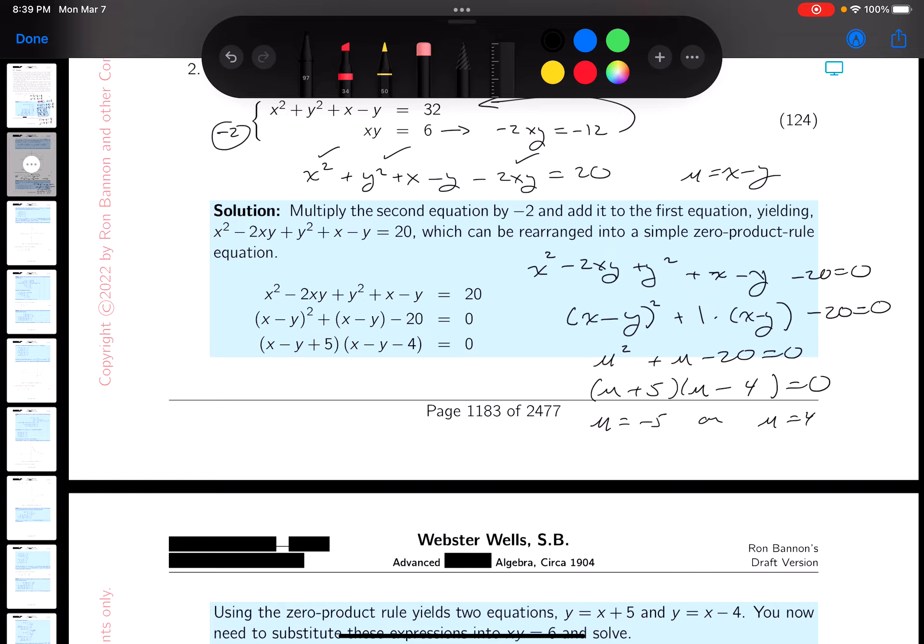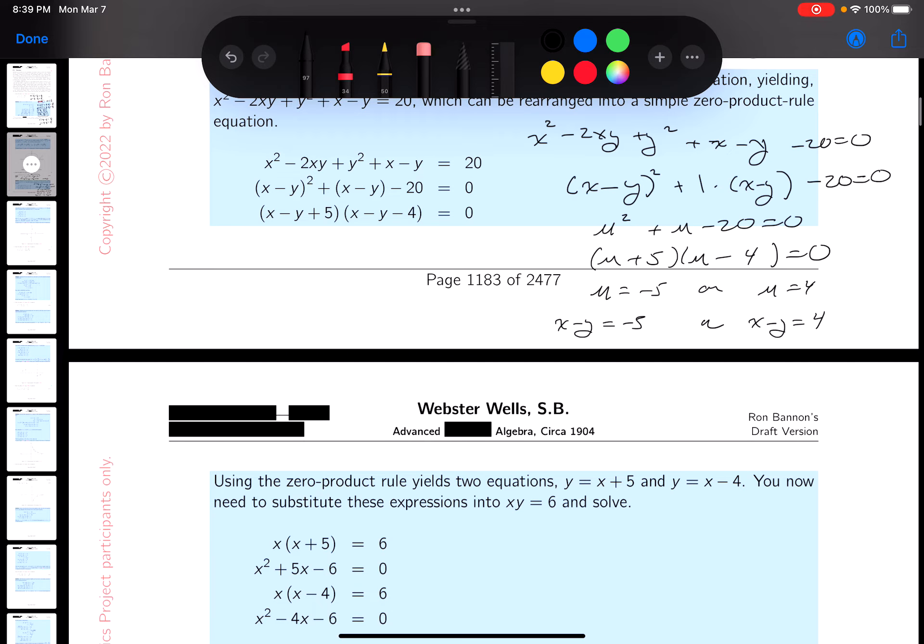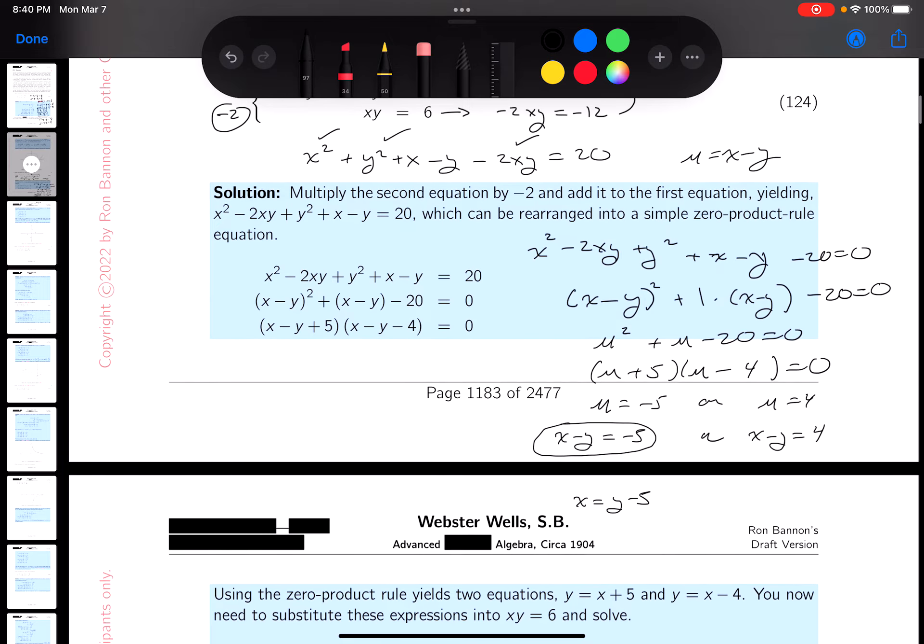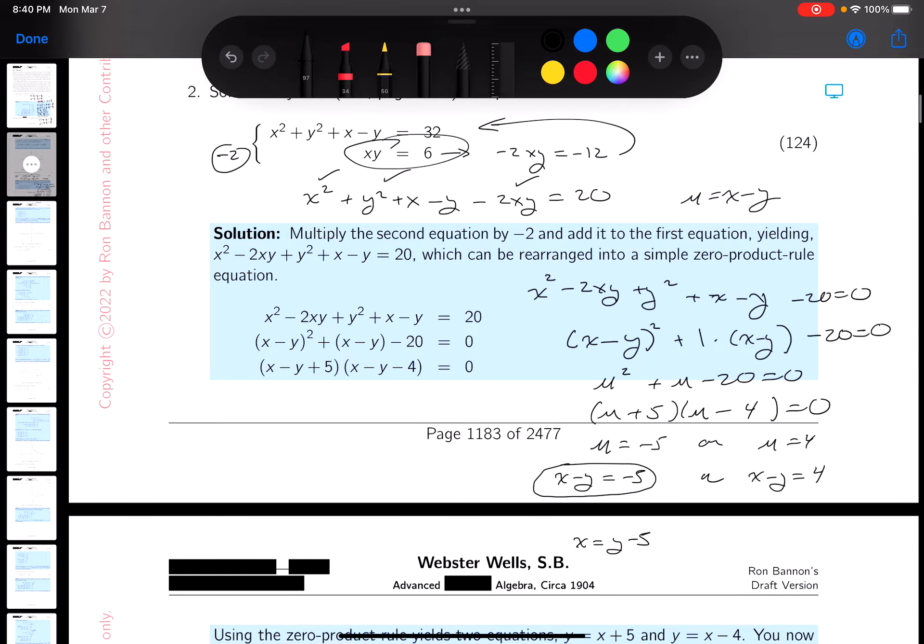But again, what's u? u is x minus y, right? I'll write that down for you. So x minus y is equal to minus 5, or x minus y is equal to 4. What are you going to do now? We have two equations, two unknowns. We can substitute that back in, right? We're using a zero product rule. Let's see what we get over here. Let's take a look. And I'm going to say, using the first equation, this one here, that's one of the solutions, by the way, I'm going to say x equals y minus 5.